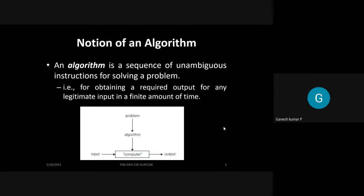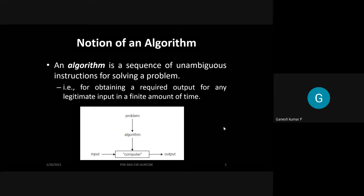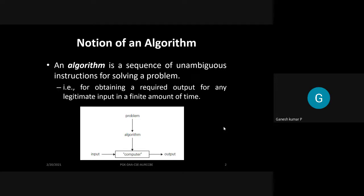The notion of an algorithm can be found in the Levitin book. When reading a definition, remember the keywords. A step-by-step instruction to solve a problem is a friendly way of defining an algorithm. The real definition is: it is a sequence of unambiguous instructions. The word 'unambiguous' is key — instructions must be clear and free from any confusion.